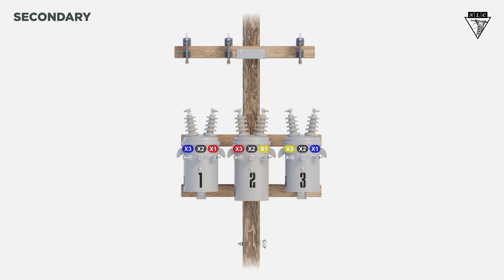Using the lighter transformer's X2 bushing as the neutral, we'll ground it to the pole. Connect the X3 of the second transformer to the X1 of the first transformer. Connect the X1 of the second transformer to the X3 of the third transformer. Then, connect the X1 of the third transformer to the X3 of the first transformer.